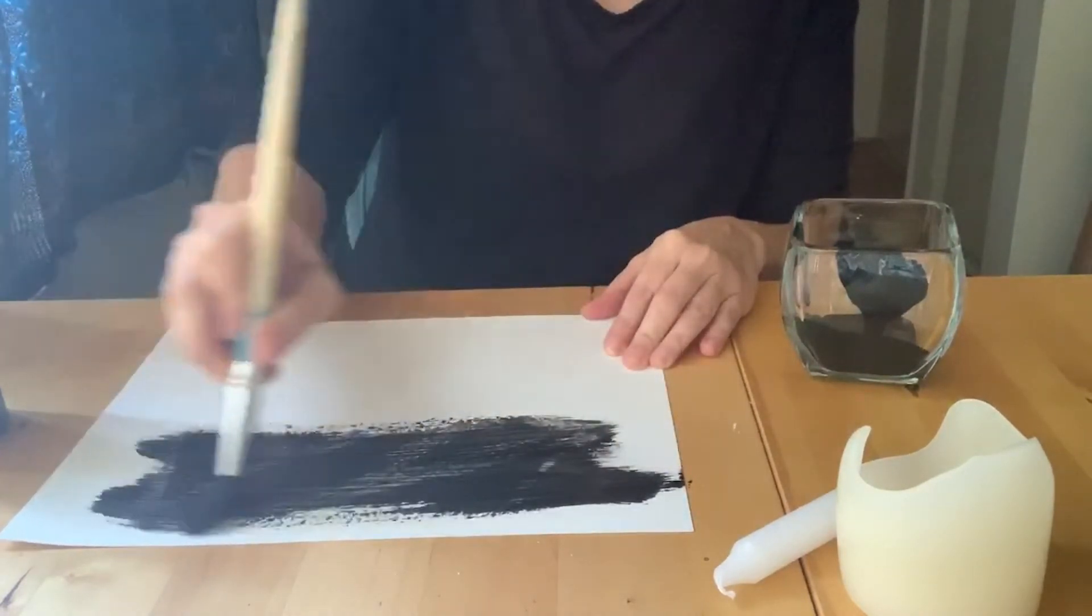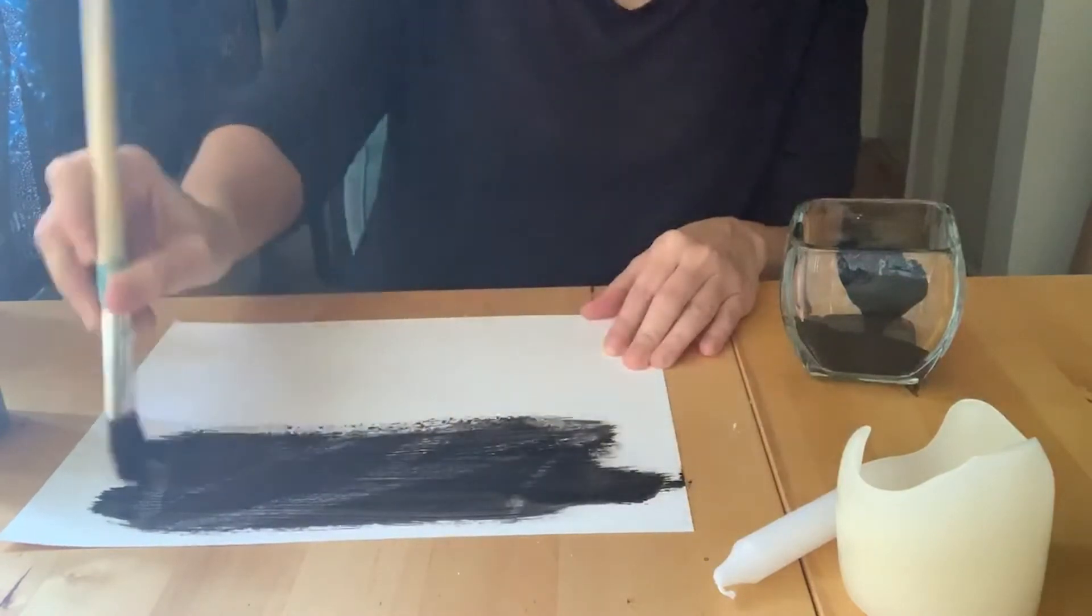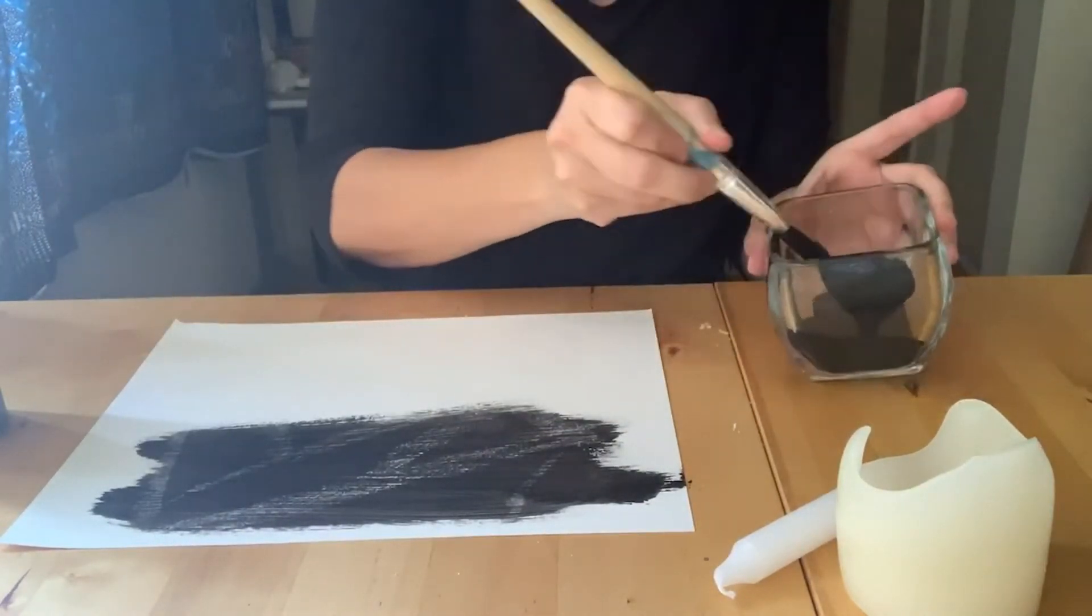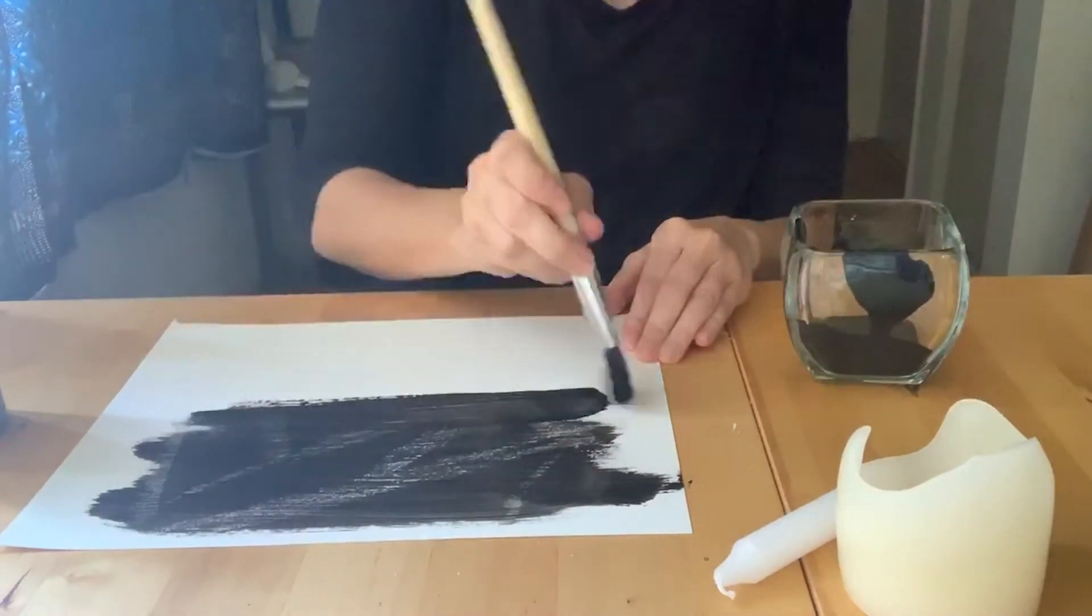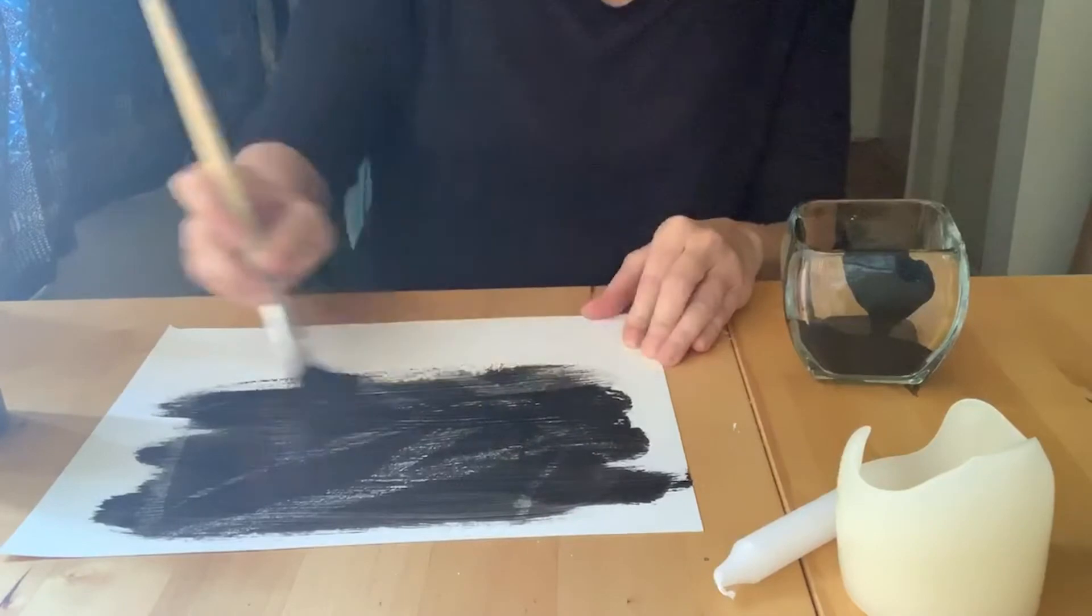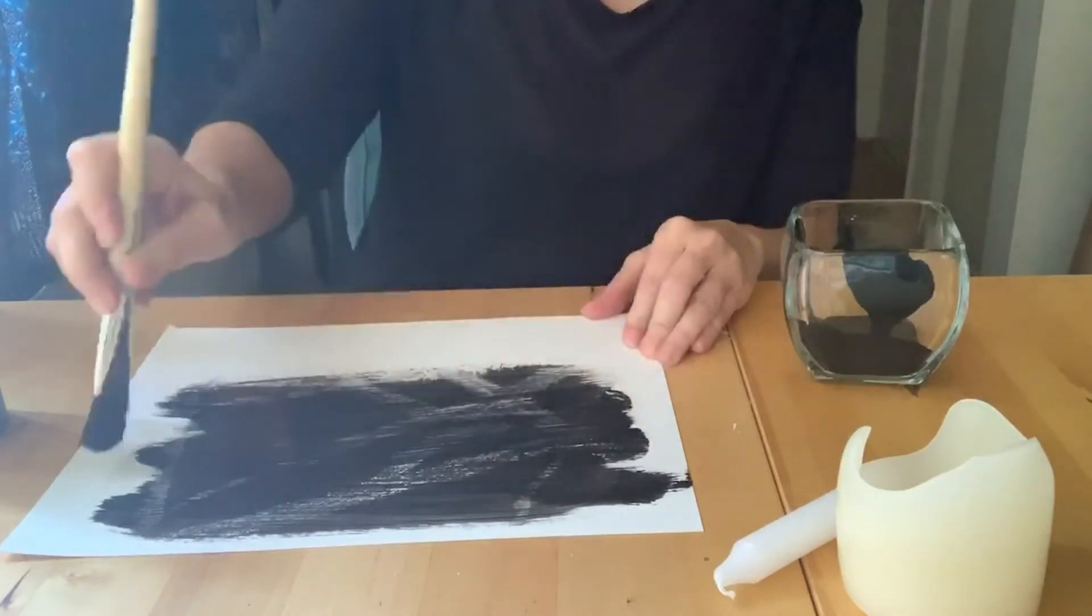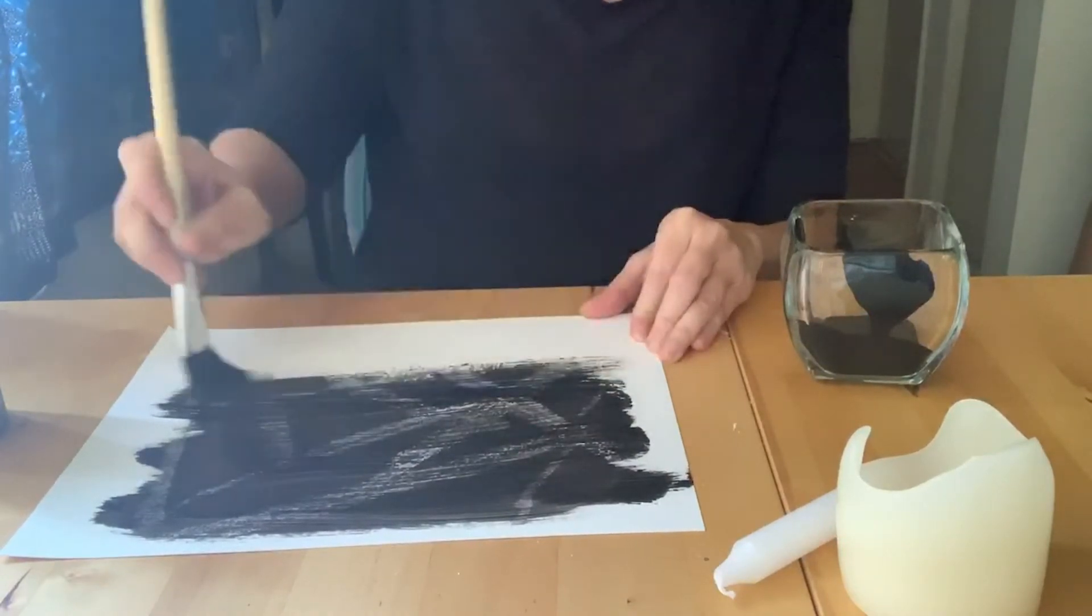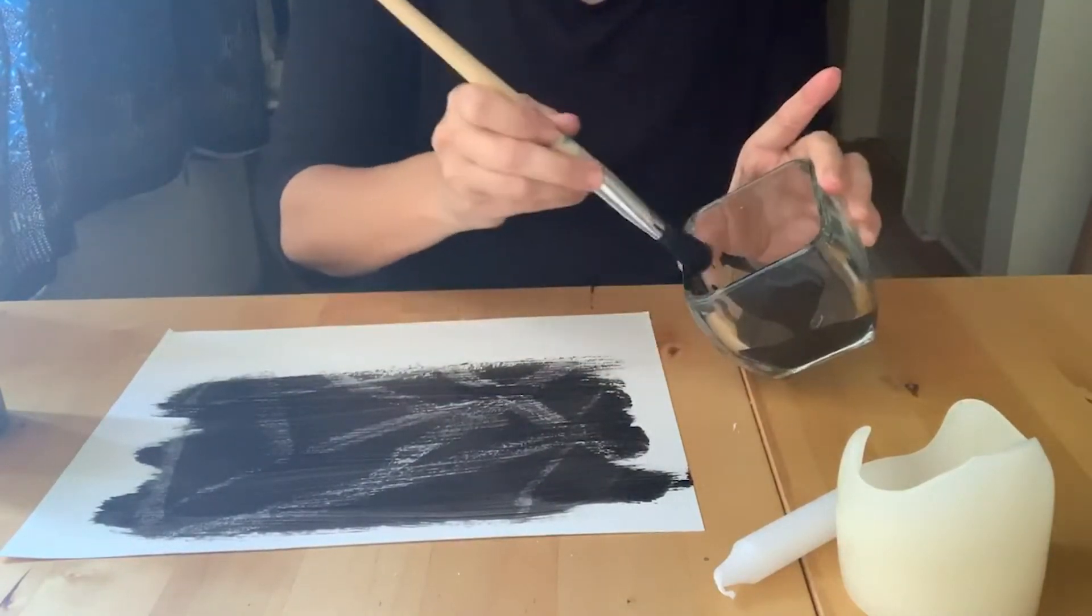And now we're going to paint right across our paper and let's see what happens. Here I go, back and forth and back and forth. Do you see something happening? I see something starting to happen. I'm gonna keep going and you keep going too, back and forth across your paper. We don't need too much paint really.